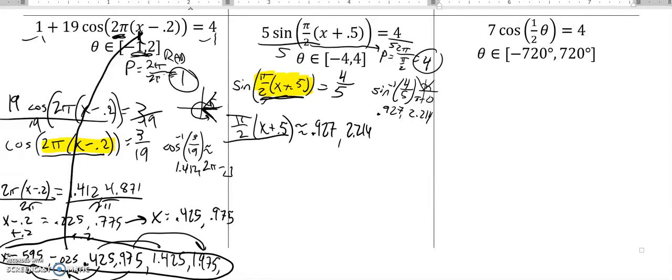So first thing I need to do is divide by π over 2, which is the same as multiplying by 2 over π, so I think I'll do that. So x plus 0.5, if I multiply each of these by 2 over π, in the first case I get 0.590, in the second case I get 1.410.